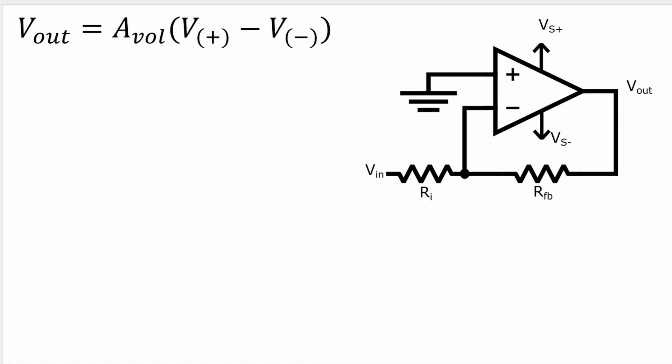And to derive the equation for the voltage gain we'll start with this equation for the op amp and then substitute in values for the voltage at the non-inverting terminal and the voltage at the inverting terminal. And then we'll use some algebra to rearrange to get the closed loop voltage gain.